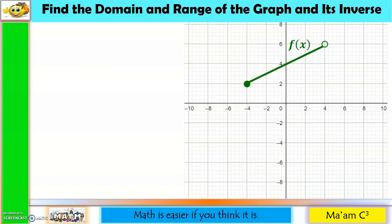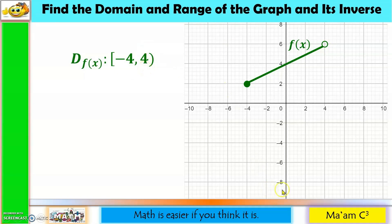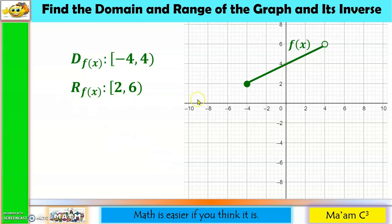Given a graph, we determine its domain and range, then find the domain and range of its inverse. The graph starts at x = −4 (included) and ends at x = 4 (not included), so the domain is [−4, 4). Looking at the y-axis, the graph goes from y = 2 (included) to y = 6 (not included), so the range is [2, 6). For the inverse, the domain is [2, 6) and the range is [−4, 4).